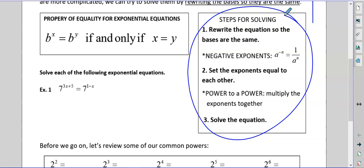So in example number 1, notice how we have a base of 7 on each of them. They're equal to each other. When the bases are equal, we can basically get rid of them and just say whatever the exponent is here is equal to the exponent over here. Now I'm going to add x and get 4x. I'm going to subtract 5 and get negative 4. Divide by 4. x is negative 1.